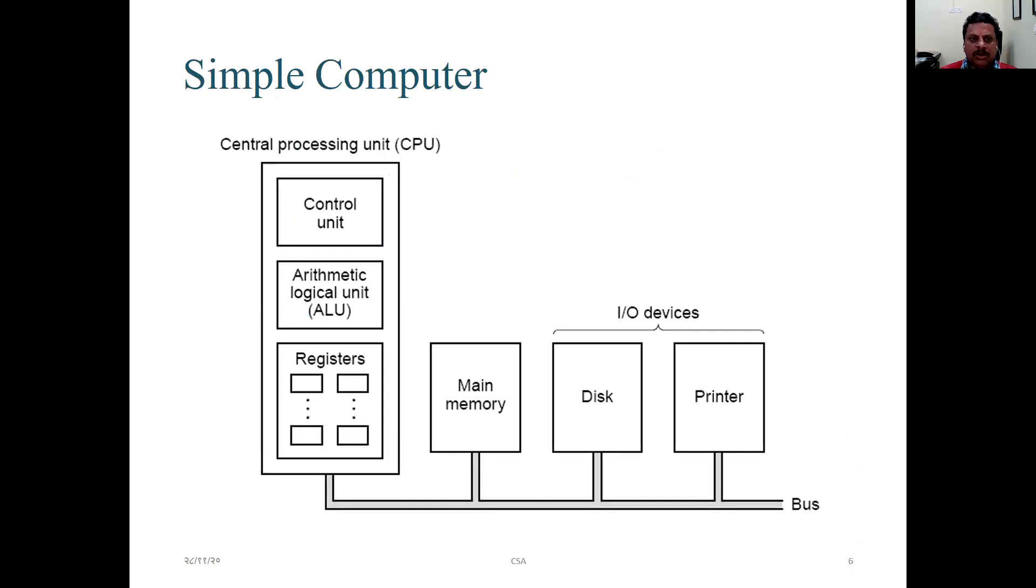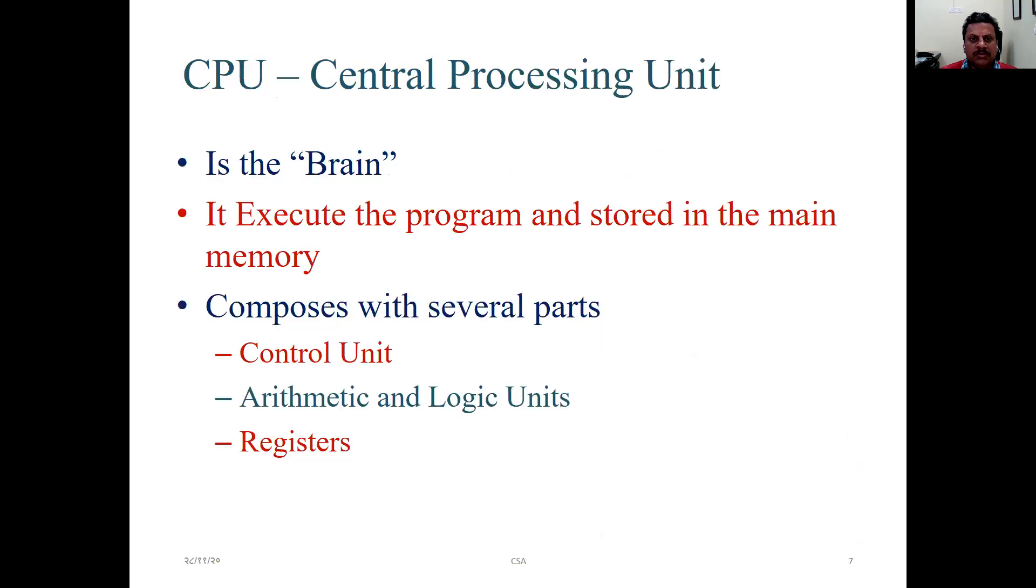Now here is a block diagram. Under CPU, you have control unit, your arithmetic logic unit which is short form as ALU. You have registers, main memory, disks, printers, that means input-output devices, and you also have input devices. Overall, this is the simple block diagram of computer.